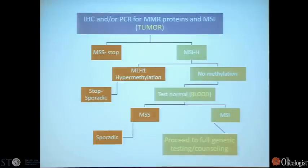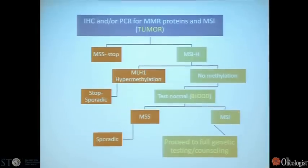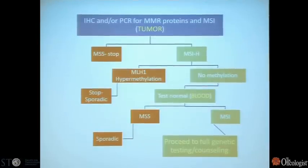In terms of genetic counseling, this is an algorithm we go through in the clinic when we see a patient with colon cancer. We test for microsatellite instability — either the DNA-based test or immunohistochemistry, at least one should be done. If it appears to be MSI high, you can look at methylation status. If there is MLH1 hypermethylation, you can stop genetic counseling because this is a sporadic tumor, not Lynch syndrome. If there's no methylation, then you test normal tissue such as blood, and if you find MSI in normal tissue, you test other family members.